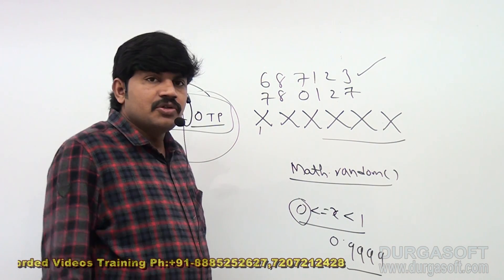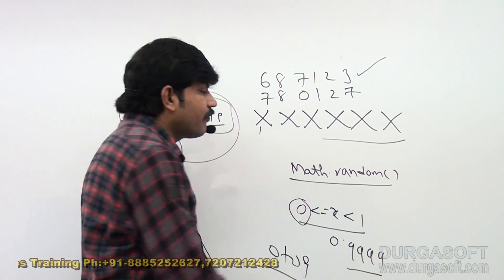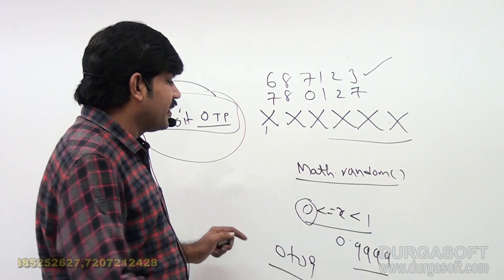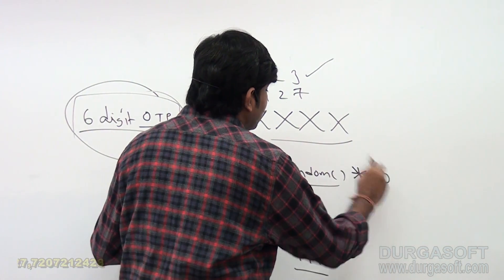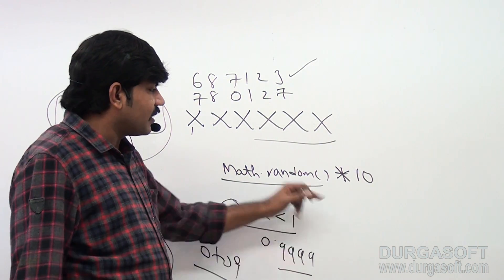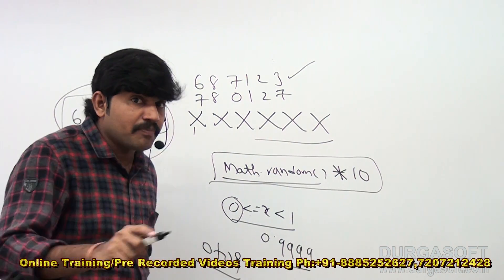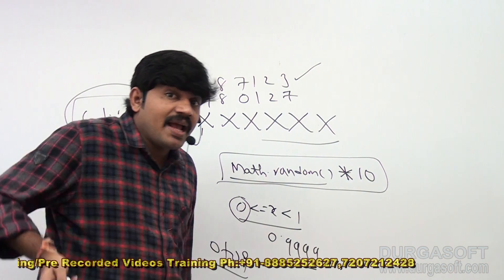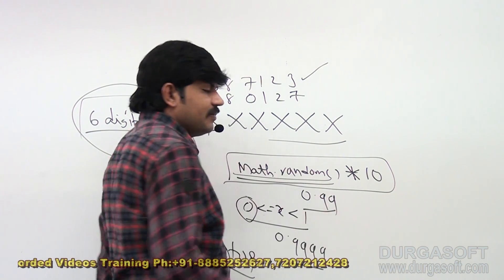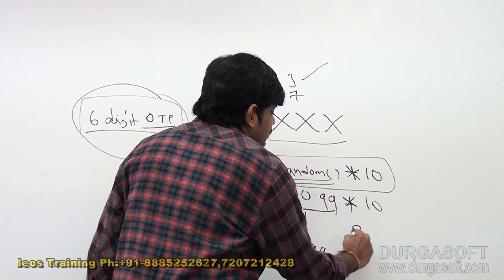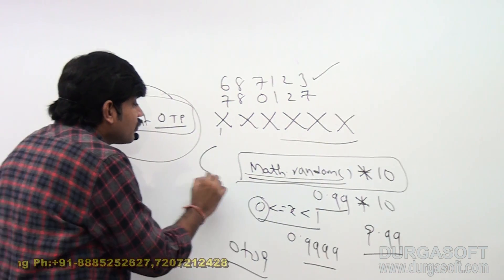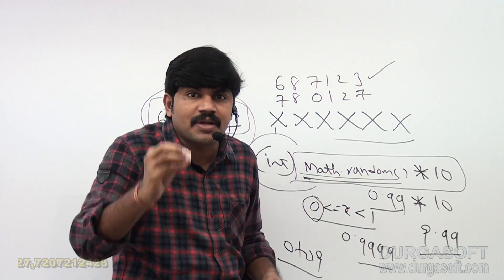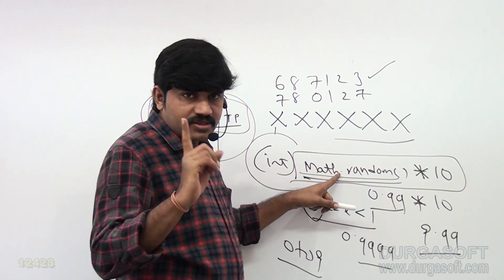Our requirement is to generate a random number from zero to nine. The logic is: Math.random() multiplied by ten. The minimum result is zero (zero times ten equals zero). The maximum is 0.9999... times ten, which is 9.9999... If I typecast that to int type, the result is always going to be zero to nine — a random number from zero to nine. This is the logic I want to use in our application.